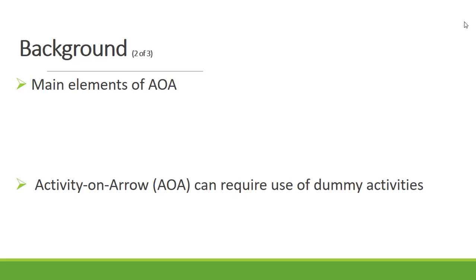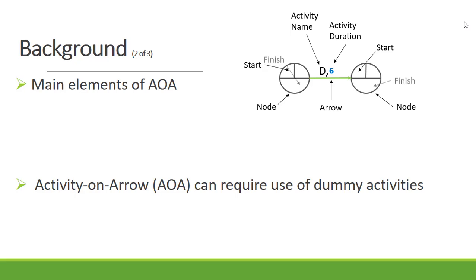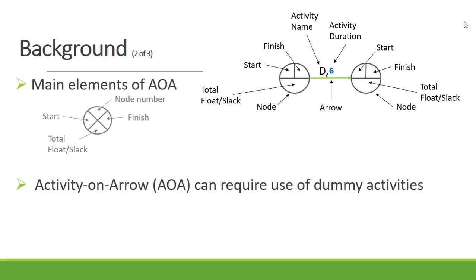The main elements of the activity on arrow are the arrow, where we indicate the activity name and the activity duration. The activities are linked with nodes, and on the nodes we normally indicate the start time, the finish time of the node, and then the finish minus start is used to calculate our total float and slack. In some instances, we can also use a node divided into four segments, where we also indicate the node number.